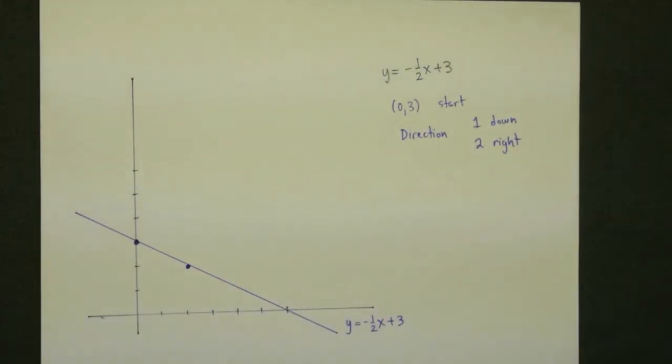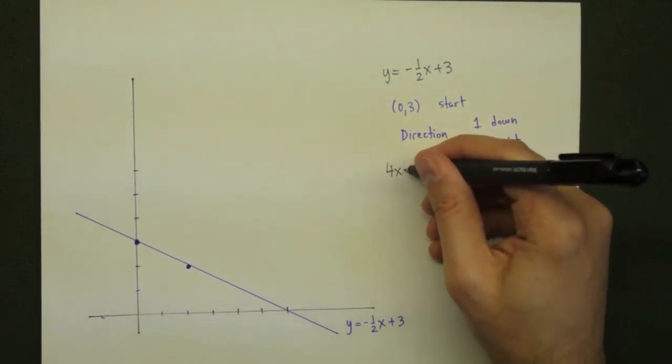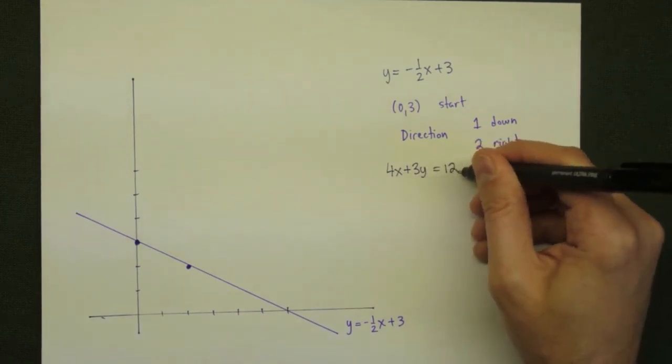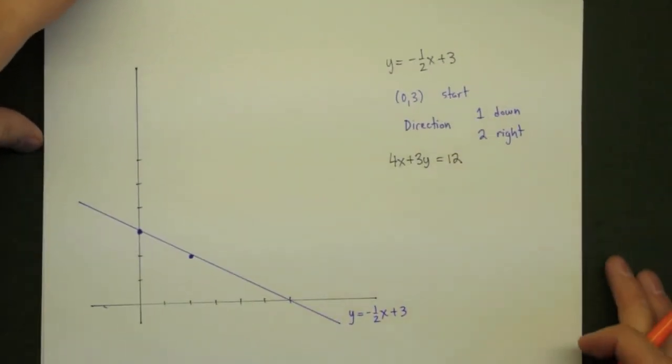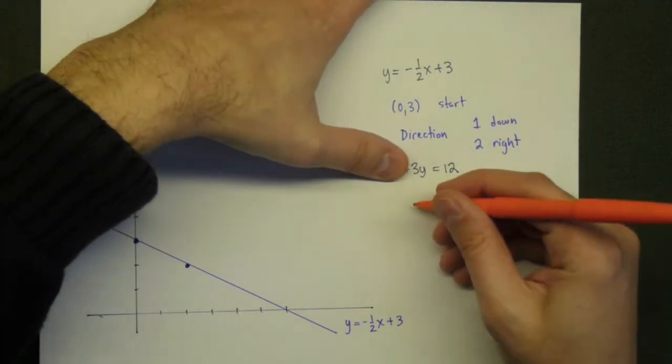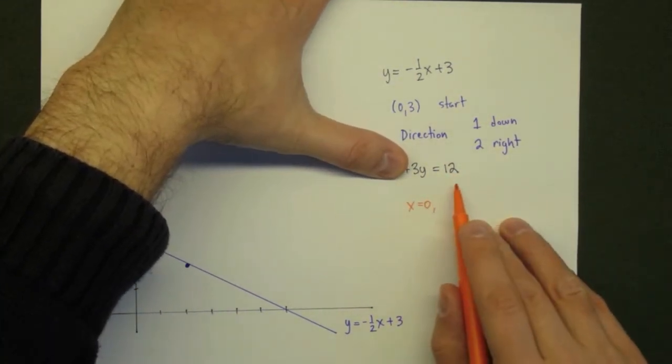To take a look at an example, let's say we want to graph the equation 4x plus 3y is equal to 12. For this equation, we need to find our two intercepts. So, we start by taking x is equal to 0. Solving the resulting equation, we see that y has to equal 4.